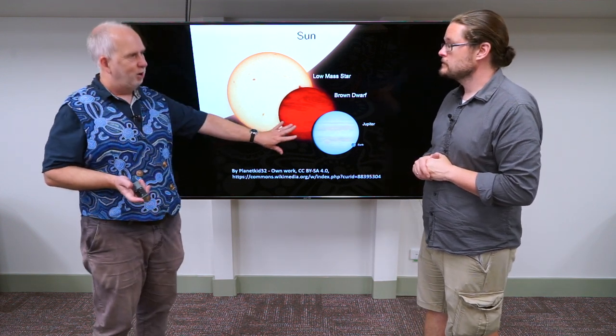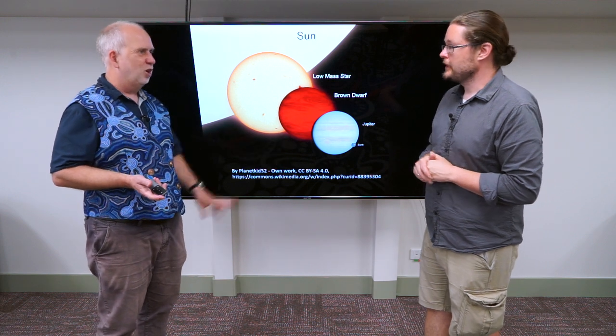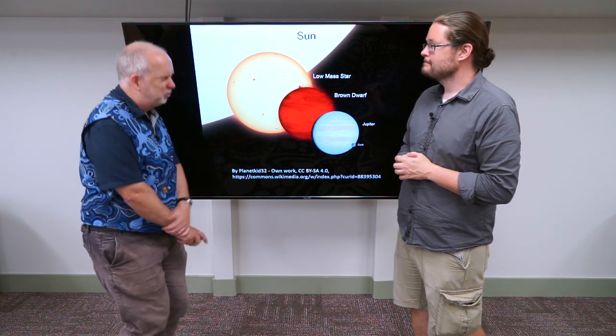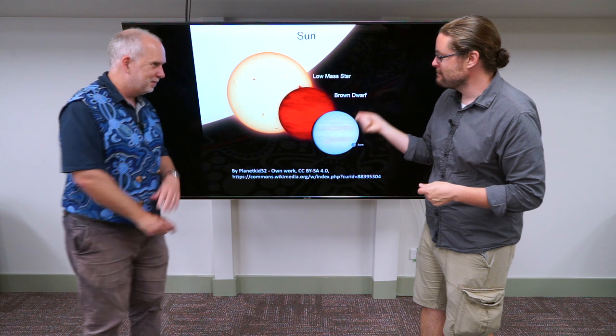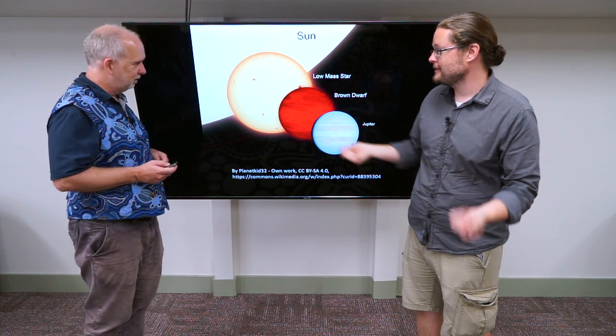So probably they really are failed stars, stars that tried to form in the normal way, but they were just so small. They just didn't get enough blanket to kick on, and then they just kind of petered out.